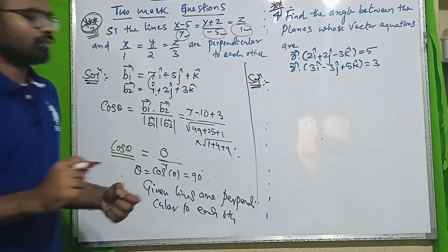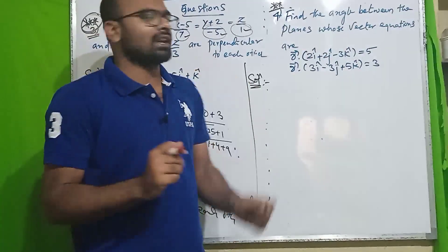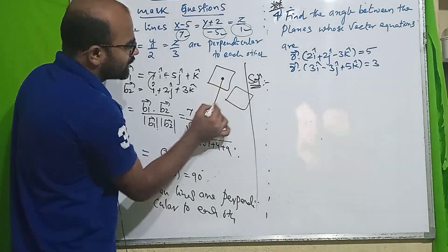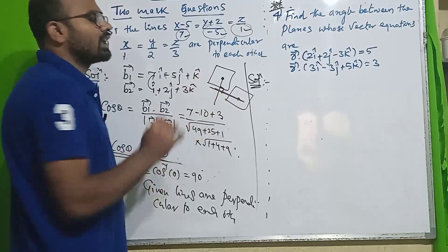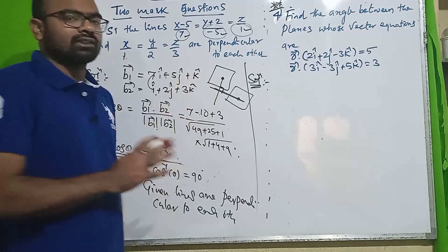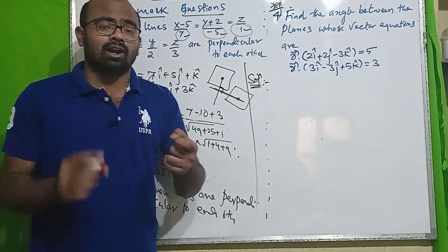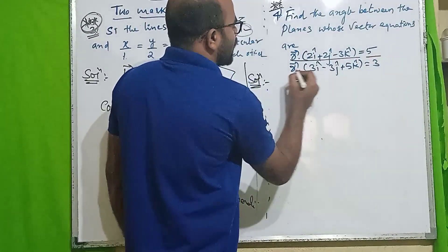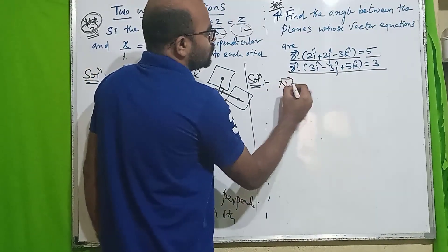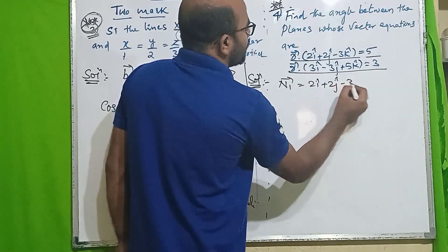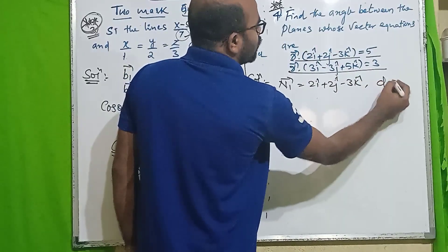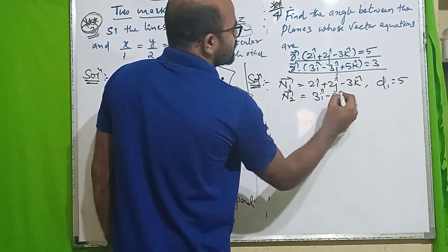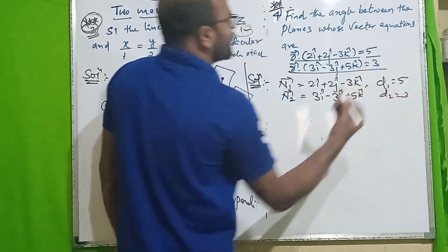Angle between the planes: the angle between two planes equals the angle between their normals. For the plane formula R · n = d, n is the normal vector. Given: R · n1 = 5 and R · n2 = 3. So n1 = 2i + 2j − 3k with d1 = 5, and n2 = 3i − 3j + 5k with d2 = 3.